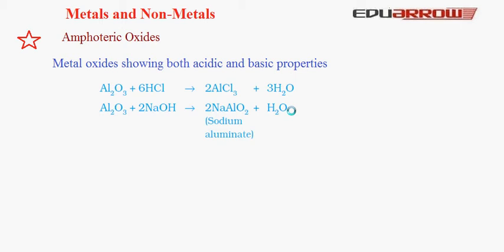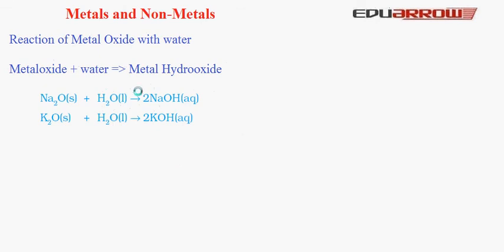Now let us understand how metal oxide reacts with water. Metal oxides react with water to give metal hydroxide. The general reaction is: Metal Oxide + Water → Metal Hydroxide. For example, Na₂O + H₂O → NaOH, and K₂O + H₂O → KOH.